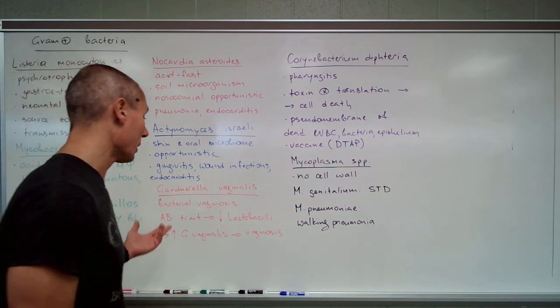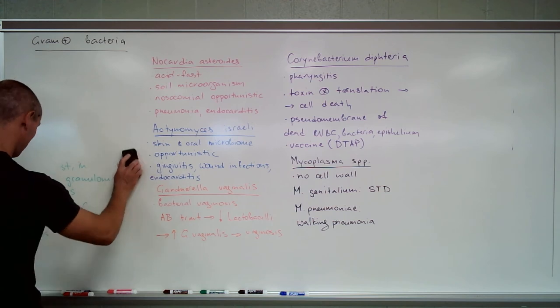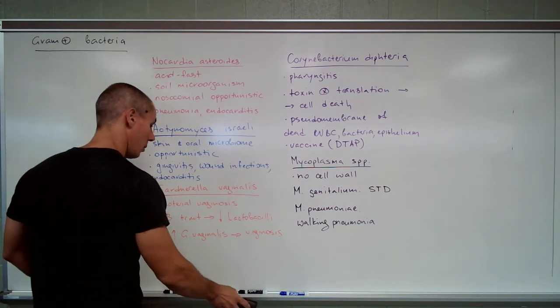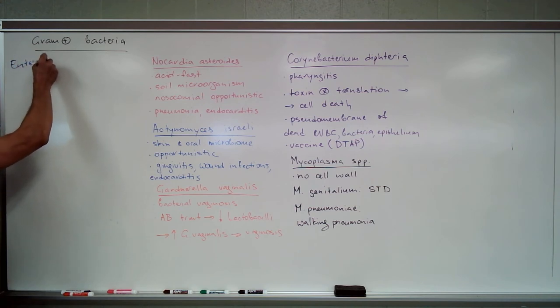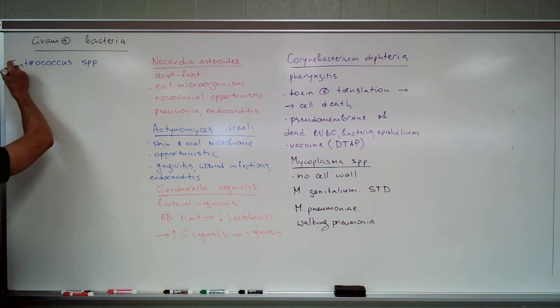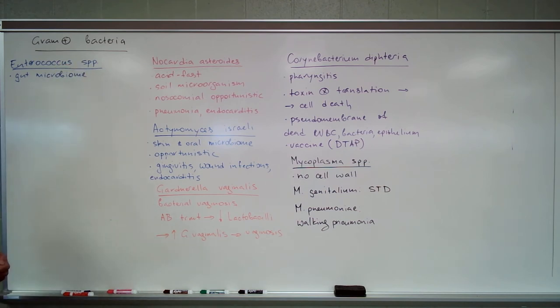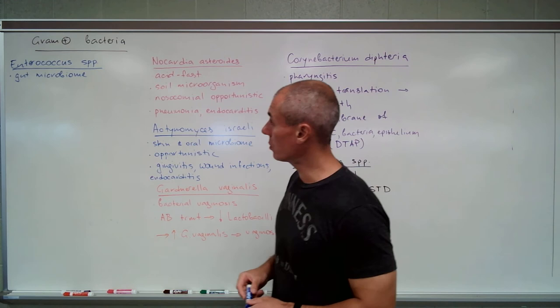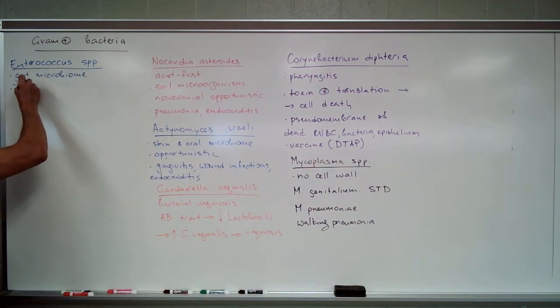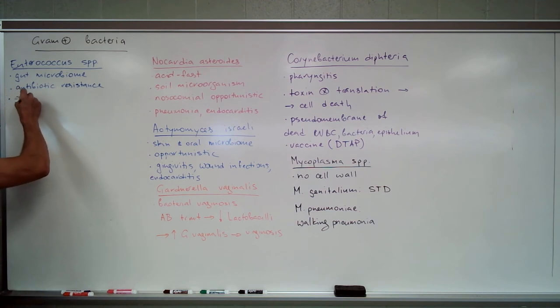Now we're going to talk about a few common members of the human microbiome - gram-positive members. The first one will be Enterococcus species, for instance Enterococcus faecalis or Enterococcus faecium. Found in gut microbiome. Since it's found in gut microbiome, it's exposed to various antibiotics that we take orally, so one of the distinctive features of Enterococcus is they're pretty antibiotic resistant.